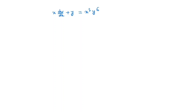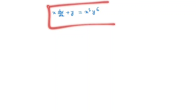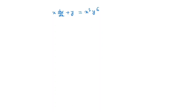Hi everyone, welcome to my channel. Now we will solve the following differential equation: x dy/dx plus y is equal to x cubed times y to the power 6. Note that this is a Bernoulli's equation. How do we know? Because here we have y, and on the right hand side we have y to the power 6. So this is the general form of a Bernoulli's equation.